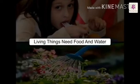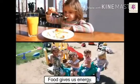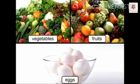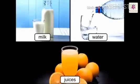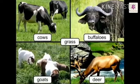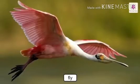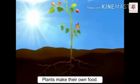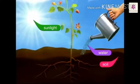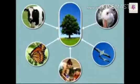Living things need food and water. All living things need food and water to live. Food gives us energy to do our work. We eat vegetables and fruits, eggs, etc. We drink water, milk, juices, etc. Cows and buffaloes eat grass. Lions and tigers eat other animals. Most of the birds eat small insects. Plants are the only living things that make their own food. They prepare food with the help of soil, water and sunlight. All other living things depend on plants for food.